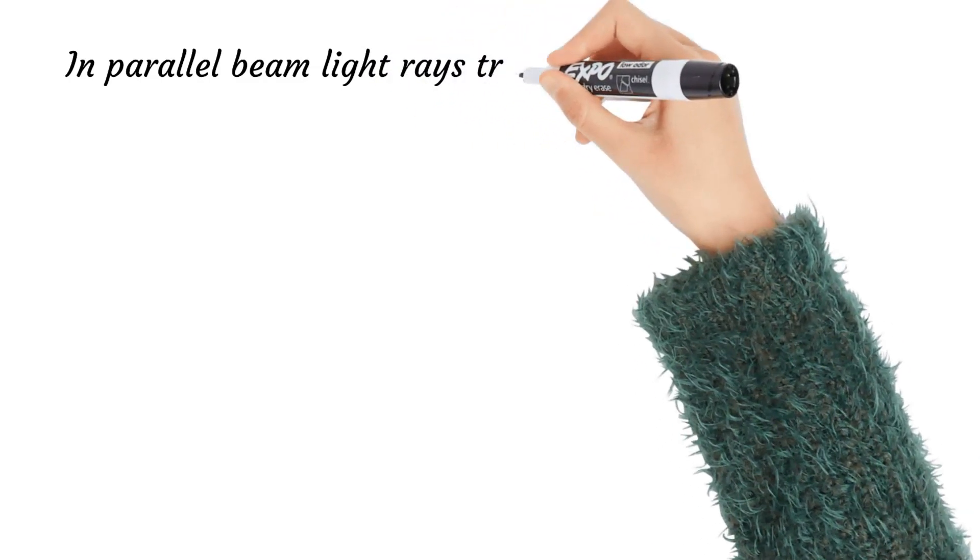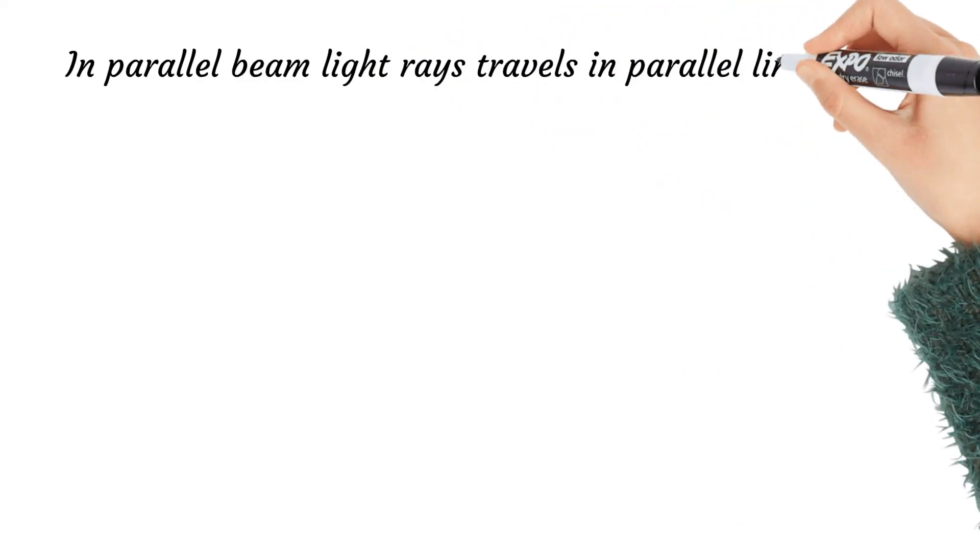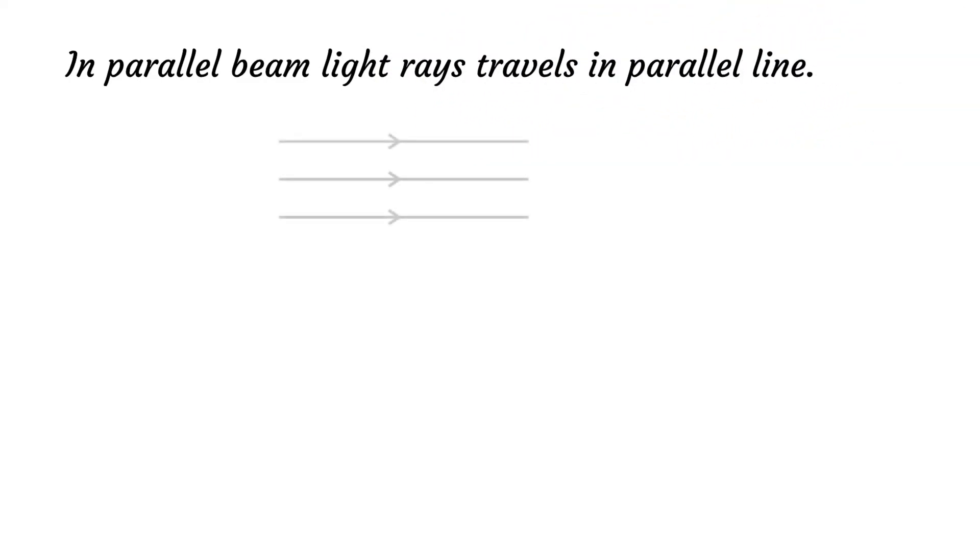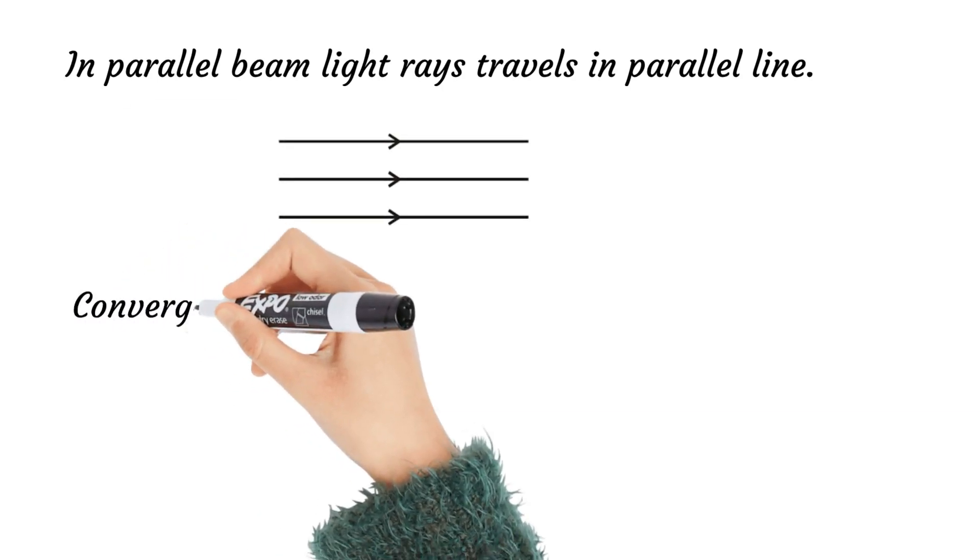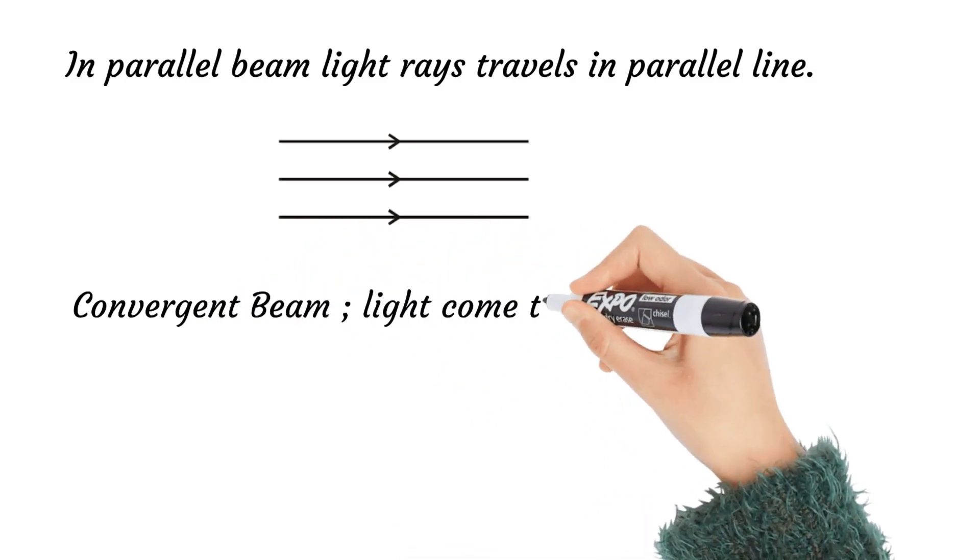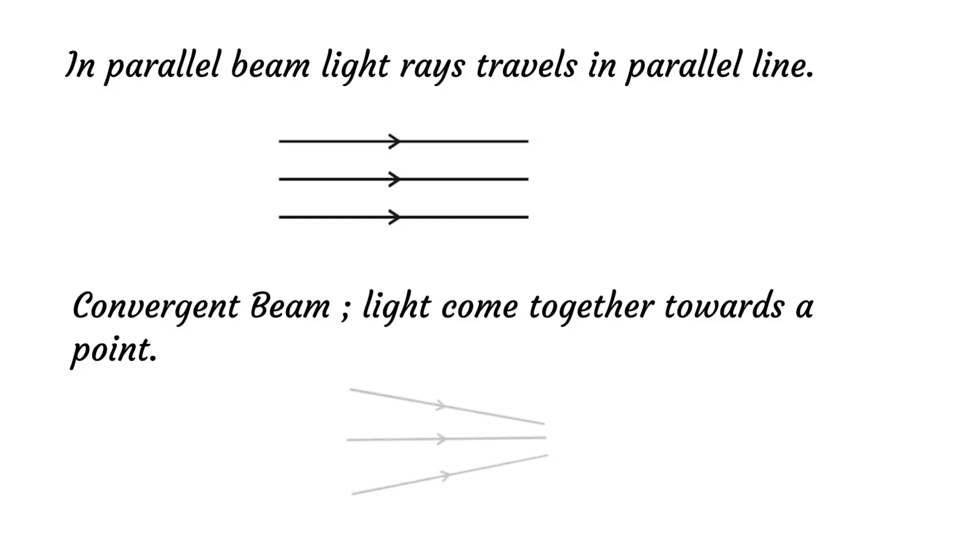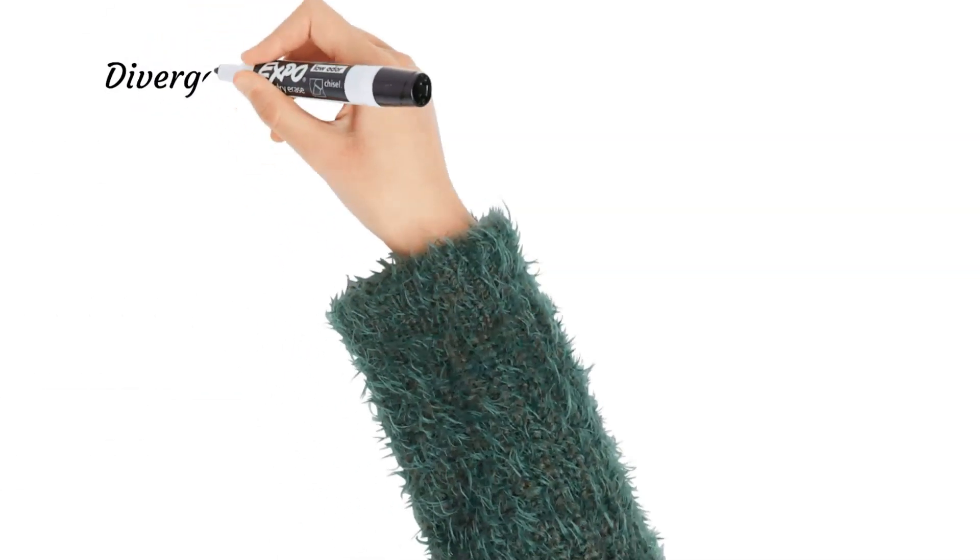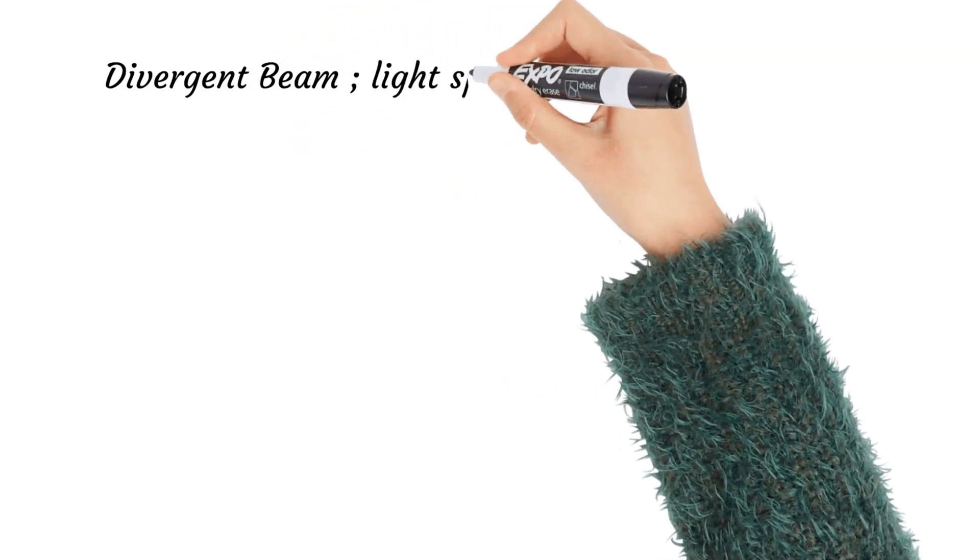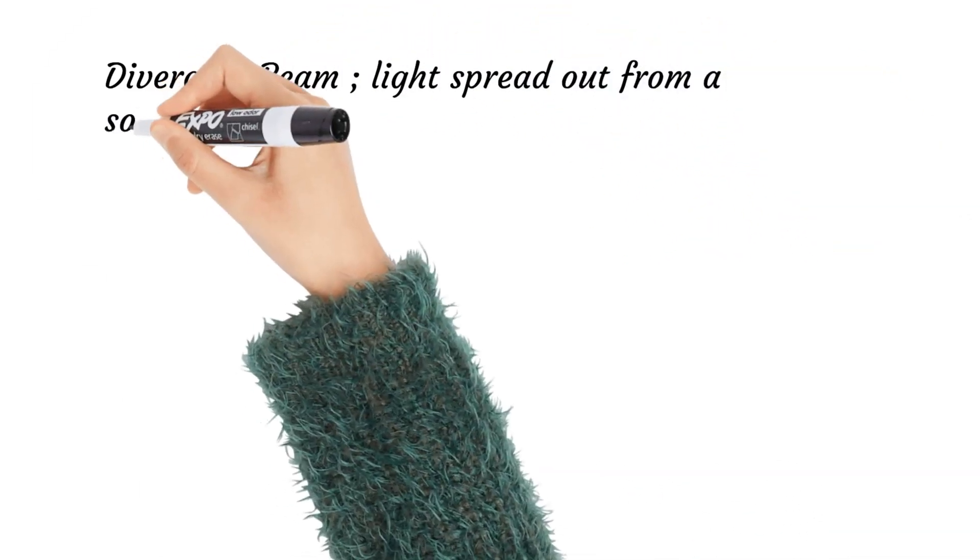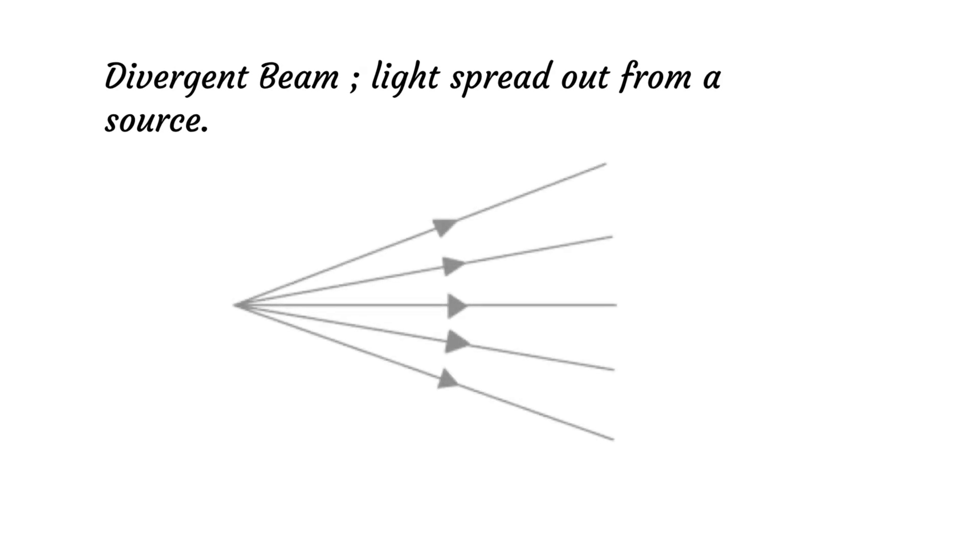In parallel beam, light rays travel in parallel straight lines. They don't meet, as shown below. In convergent beams, light rays come together towards a point. In divergent beam, light rays spread out from a source. It spreads out from particular points outwards.